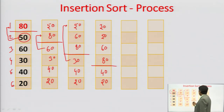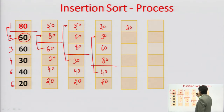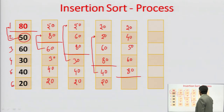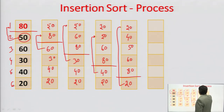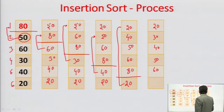Pick element 40 from the unsorted part and insert it into the sorted part. 40 should come at the place of 50, so elements 50 onwards shift one step down. The sorted part now contains 30, 40, 50, 60, and 80, with only one element remaining in the unsorted part. Pick the last element, 20 — its position should be at the place of 30 — so 20 is inserted and all other elements shift one step down. This is the sorted array.